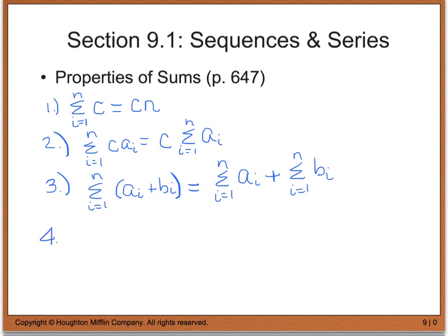And finally, your fourth property says that the summation from i equals 1 to n of a_i minus b_i is equal to the summation of i equals 1 to n of a_i minus the summation from i equals 1 to n of b_i.